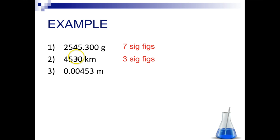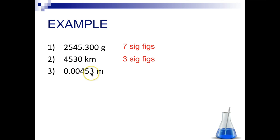Let's look at the last one. We have a decimal, but leading zeros are never significant. So these three zeros in the front are not going to count when we count our significant figures. So we only have 1, 2, 3 — three significant digits.